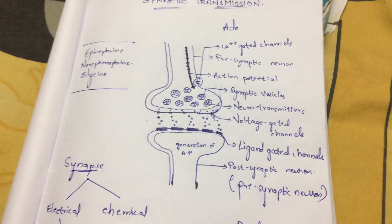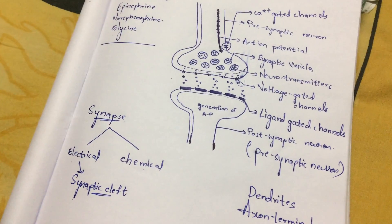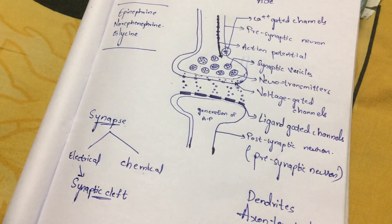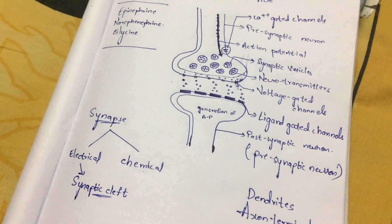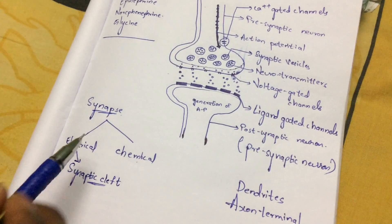The meaning of synapse is: the transmission of neural signals from one neuron to another neuron is known as synapse. There are mainly two types of synapse: electrical synapse and chemical synapse.